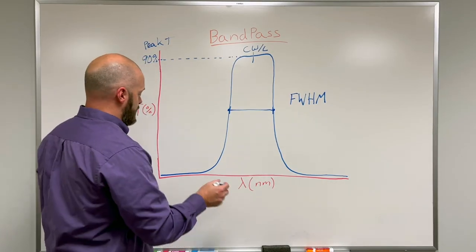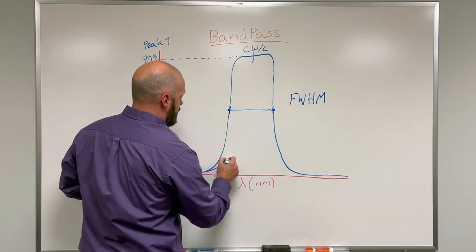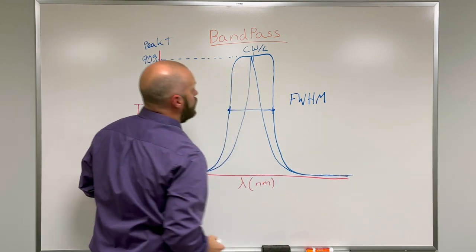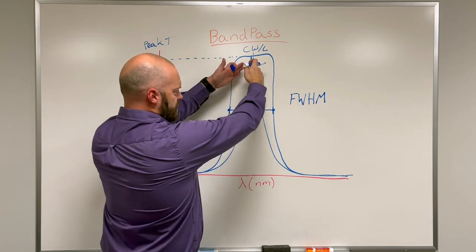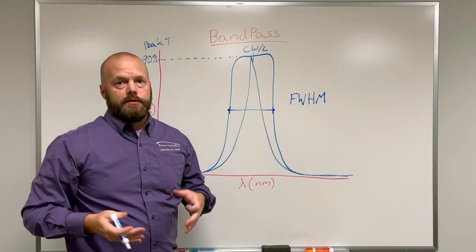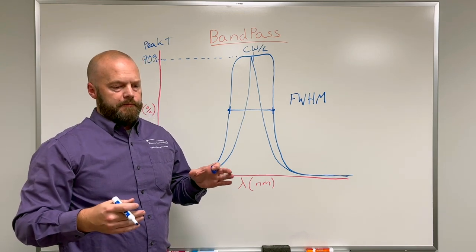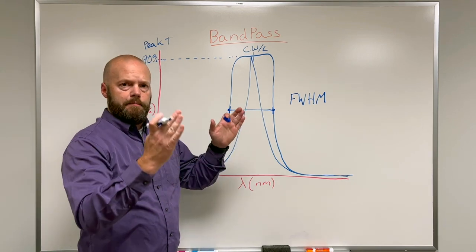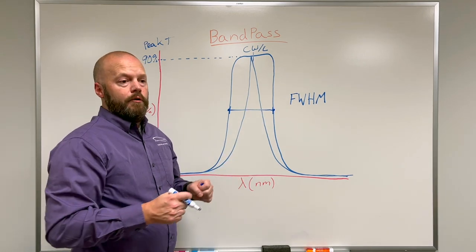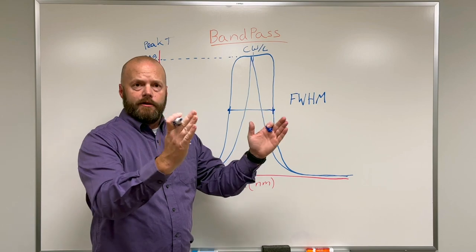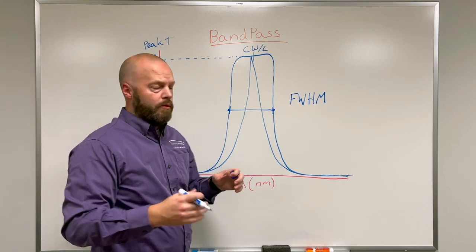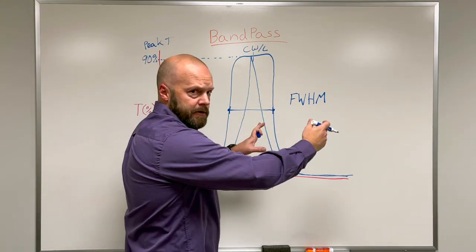A one cavity filter can sometimes be referred to as a spike filter. A single cavity would look like this, or even maybe broader, but you can see the slow sloping edges. When I say cavity, that comes down to the optical design. A cavity is a bandwidth-defined optical design parameter. As you add cavities in the optical design, think of it as chunks of layers. You have a cavity, another cavity, another cavity, and it repeats itself in a pattern.